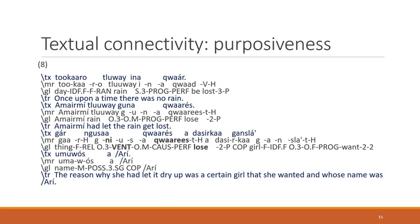Let us move on to purposiveness. To recap: purposiveness is the idea that an action is done with intention, with purpose. In example eight, once upon a time there was no rain, and someone had let the rain get lost. The part where the hither comes in is: 'the reason why she had let it dry up was a certain girl that she wanted.' The rain didn't dry up by itself — it's no accident, someone made it so. That is where we see purpose and where the hither comes in.